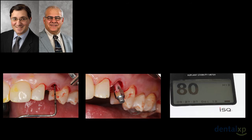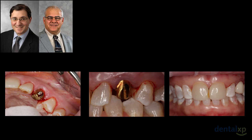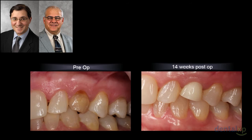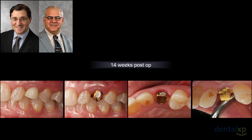We extract the tooth, the guide goes into place, the implant is positioned with a very high ISQ reading. The Atlantis abutment drops right into place. A non-occlusal function provisional is placed to maintain the soft tissue position. You can see the radiograph with the implant. Here's a 14-week follow-up — from a soft tissue standpoint it looks fantastic. When we take the provisional off, we can appreciate the sulcular health from both the buccal and the palatal aspect.